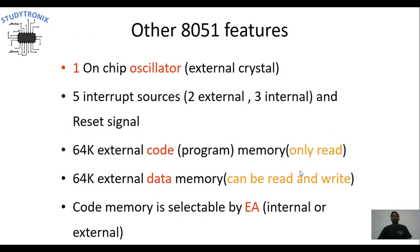The features of 8051 include one on-chip clock oscillator, whose job is to generate the clock signal required for the CPU. For interrupts, 8051 has five interrupt sources: two external and three internal. The external interrupt signals are INT0 and INT1, used for interrupting the CPU using an external device.